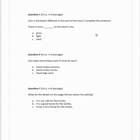Number five. From page three of our passage. How is different in the story? So, again, looking back is very important because this part of the story, how is different? And they want us to complete the sentence. There is more blank on the beach now. So, we're comparing it to the beginning of the story. There is more grass on the beach now. There is more light on the beach now. Or there is more sand on the beach now.